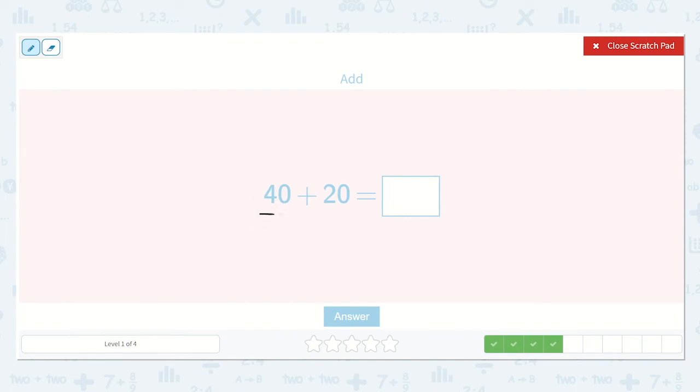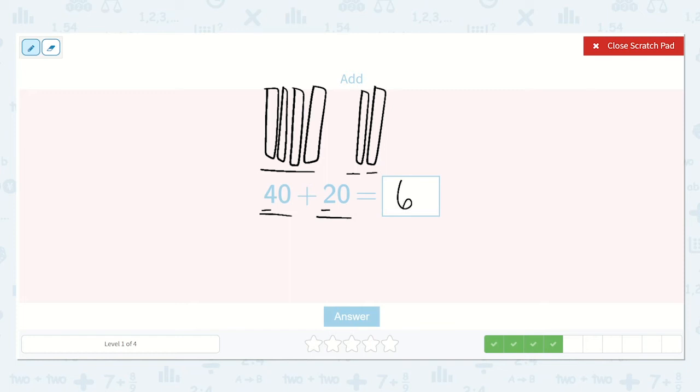Now I see we have 40 plus 20. Four tens plus two tens. One, two, three, four tens plus two more tens. Notice I leave a space between my tens so I don't get them confused. So now I have four, five, six tens. So it's 6 in the tens place, and I don't have any ones, so a 0 in the ones place. So 10, 20, 30, 40, 50, 60. Yep, 60 is my answer.